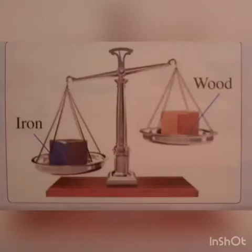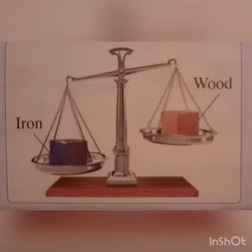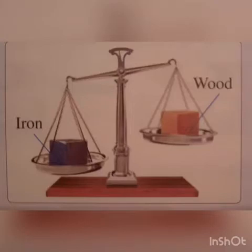The two substances are iron and wood. The two cubes shown are equal in their volumes — remember, volume is the space that an object takes. The cube of iron and the cube of wood have the same volume, but as you see the balance shows they are not equal, meaning they have different masses. So equal volumes of different substances have different masses.